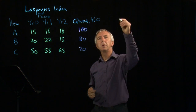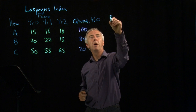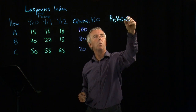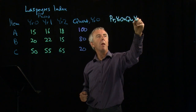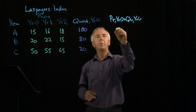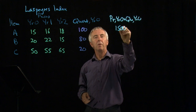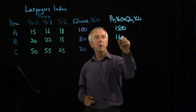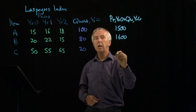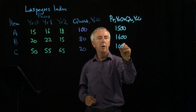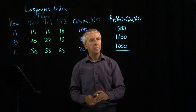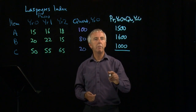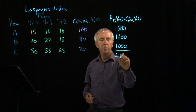We now need to multiply the price in year zero by the quantity in year zero. So 15 times 100 is 1,500; 20 times 80 is 1,600; and 50 times 20 is 1,000. That gives us the total cost in year zero of 4,100.